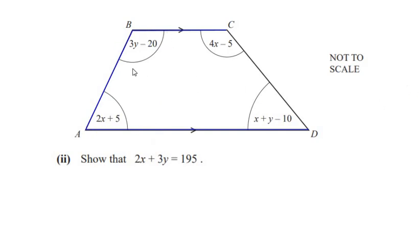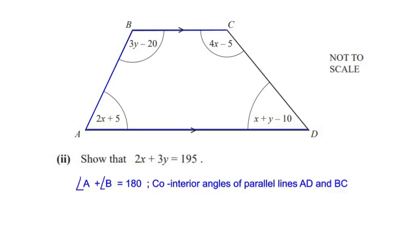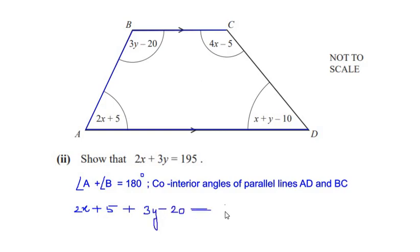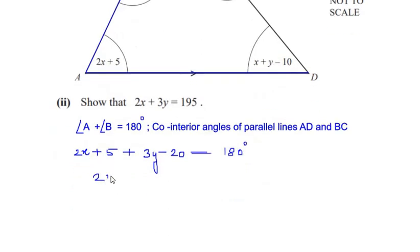Hence, using the properties of parallel lines, angle A and angle B add together because they are co-interior angles and they add up to give 180 degrees. So angle A plus angle B is equal to 180 degrees — that is the co-interior angles of parallel lines AD and BC. Let us substitute the value of angle A which is 2x plus 5, and the value of angle B which is 3y minus 20, equal to 180 degrees.